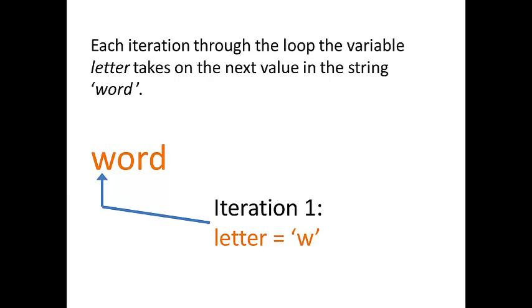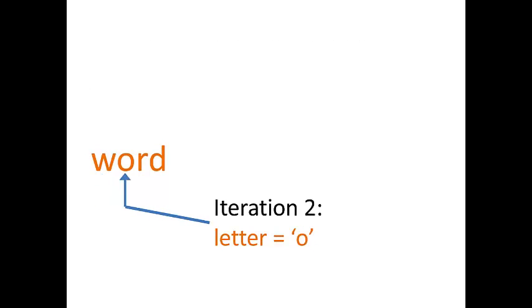So the first time through the loop, letter is equal to W. Second iteration of the loop, letter is equal to O. The third time, the letter takes on the value R. And the last iteration of the loop, letter is equal to D. And all it's doing is printing that letter.